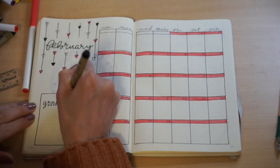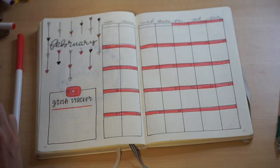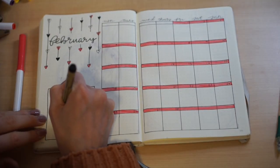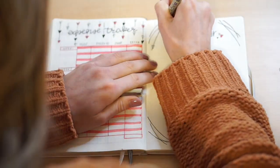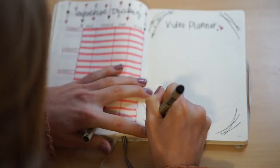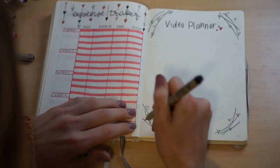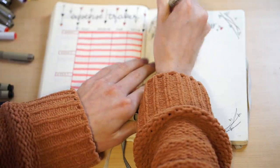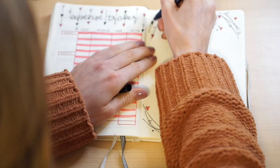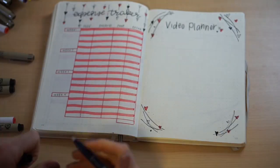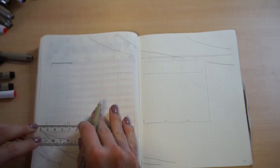As I'm finishing up my monthly spread for February, we begin to move on to the next spreads in my journal. But as you can see, the camera stopped recording, which is awesome. So you guys don't see anything from me making these actual spreads. But these two are just my expense tracker and my video planner. My expense tracker is just a way for me to keep track of my expenses, and my video planner is just a way for me to plan my videos for the month.